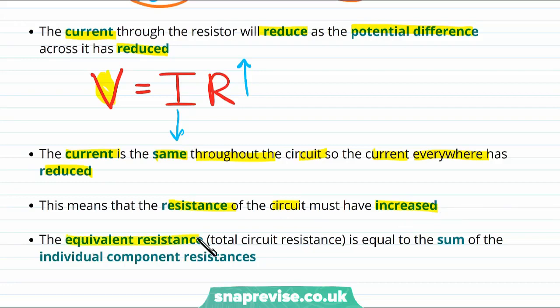The equivalent resistance, or total circuit resistance, is equal to the sum of the individual component resistances. So if we have a resistor of 5 ohms in series with another resistor of 5 ohms, the total resistance would be 5 plus 5, or 10 ohms.